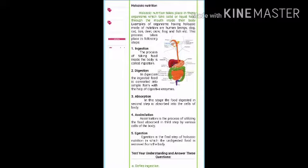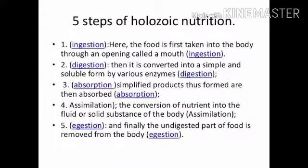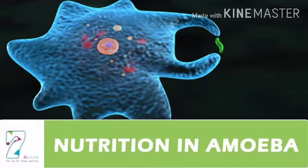First is ingestion — the process of taking food inside the body. Then digestion, where food is converted into a simple and soluble form. Then the digested food is absorbed in the body and converted into substances of the body. Last is egestion, in which the undigested food is thrown out of the body.